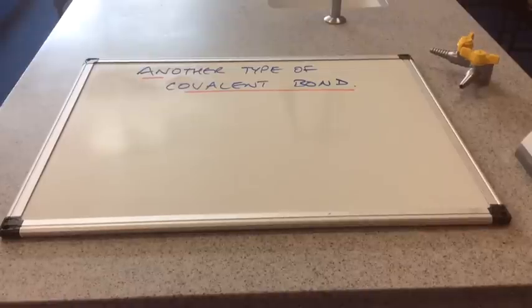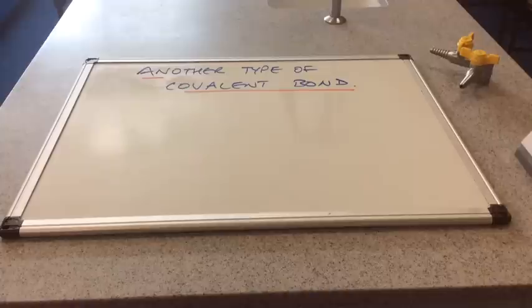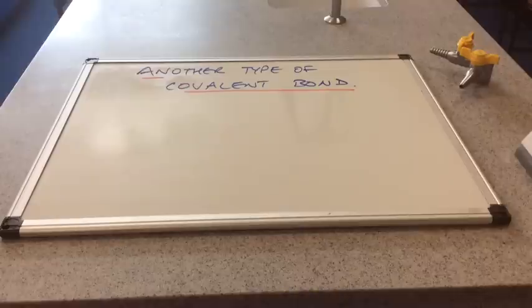In this video I'm going to look at another type of covalent bond. Because it's a covalent bond, it's still effectively a shared pair of electrons between the atoms, but it's a different type of bond in the way that the electron pairs are being shared.